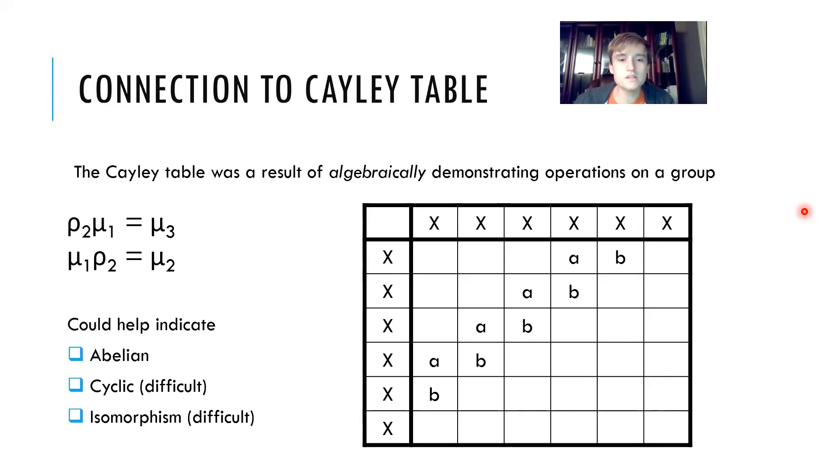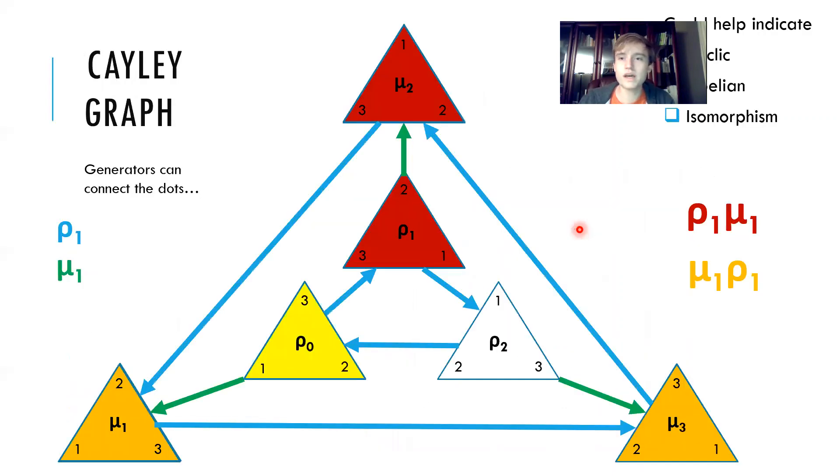Last but not least, you can use Cayley tables to see if two groups are isomorphic to each other. I did this on the last test. As you can see, both Cayley tables and Cayley graphs can show whether groups are abelian, cyclic, and isomorphic to each other. If you go back to here, we have the same properties.